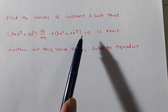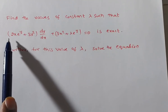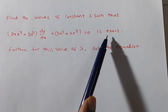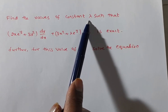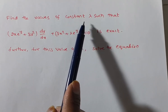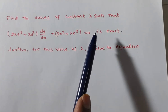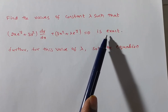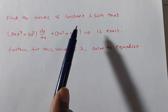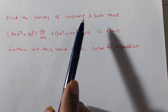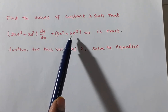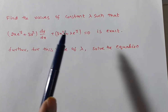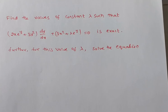They have given one differential equation saying that it is exact, and we need to find out lambda. Generally, if given a differential equation, we verify whether it is exact or not. But here, they directly say it is exact and we need to find out the constant lambda. After that, we need to find the solution for this differential equation.